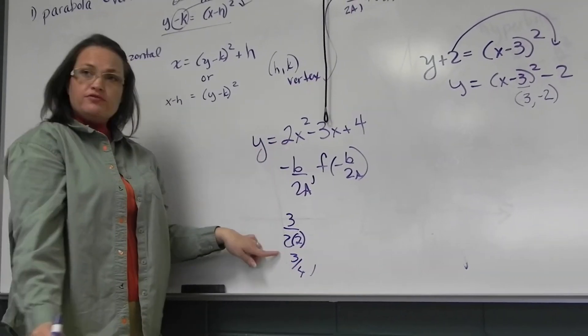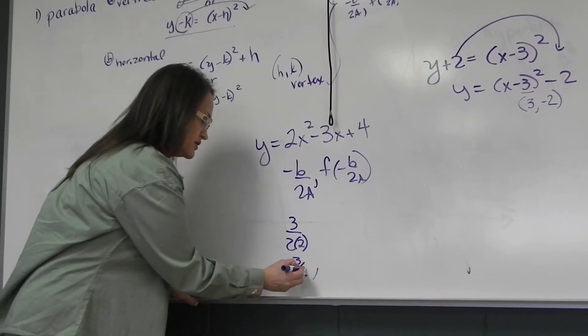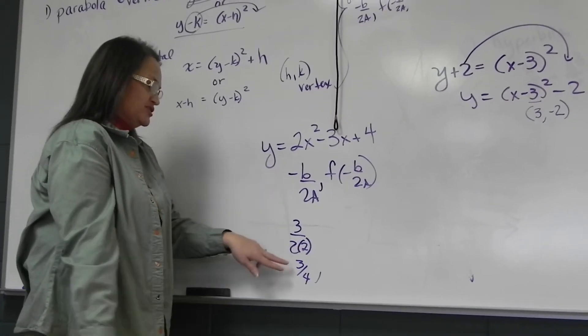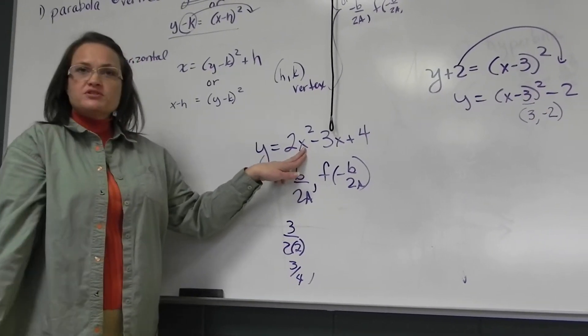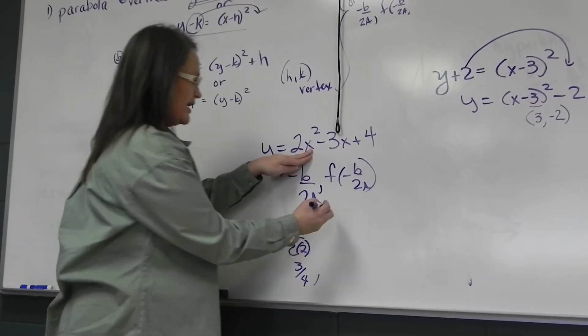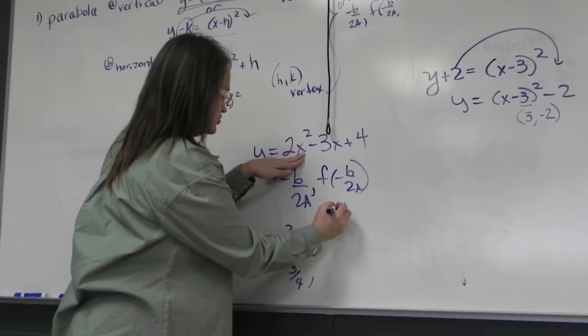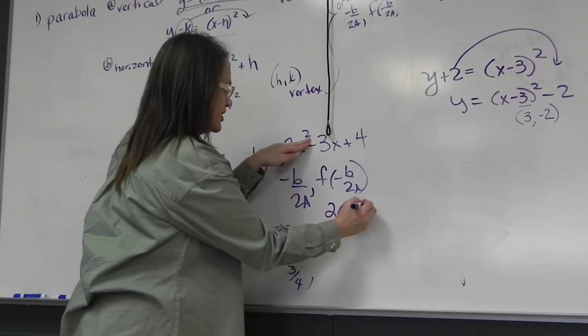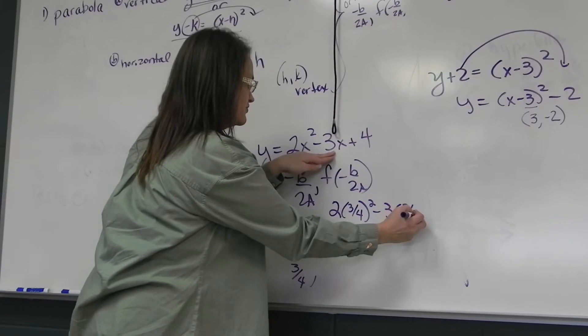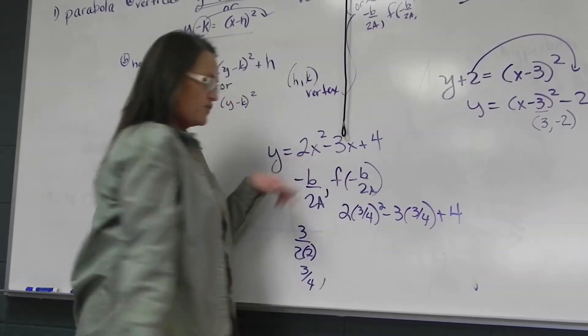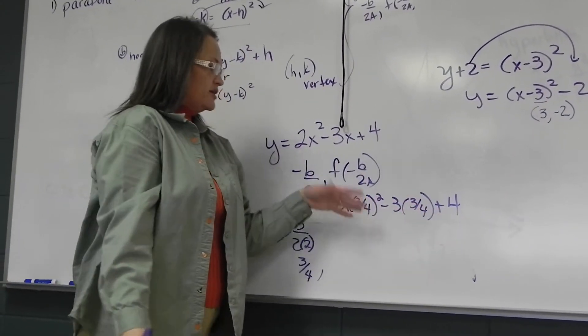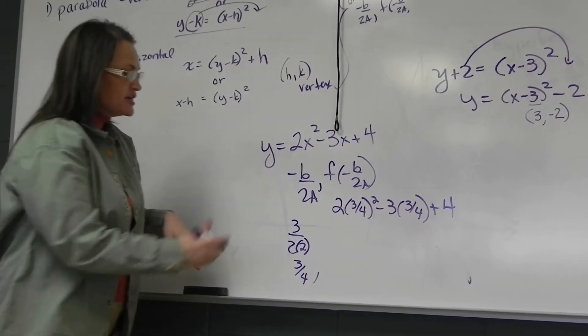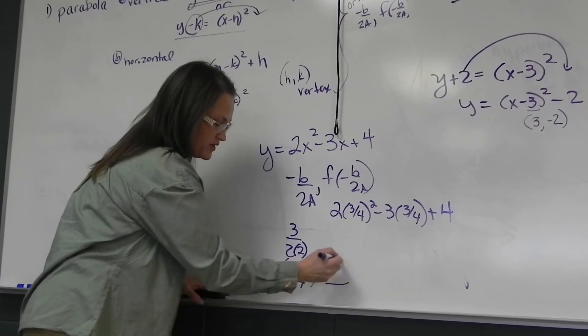So the vertex is at 3 fourths, and then I just made that up, I shouldn't have. And then plug in 3 fourths in for X. So we would have to work that out. 2 times 3 fourths squared, minus 3 times 3 fourths plus 4. So you could plug that in your calculator or work through with the fractions, but that would give you the second part of your vertex.